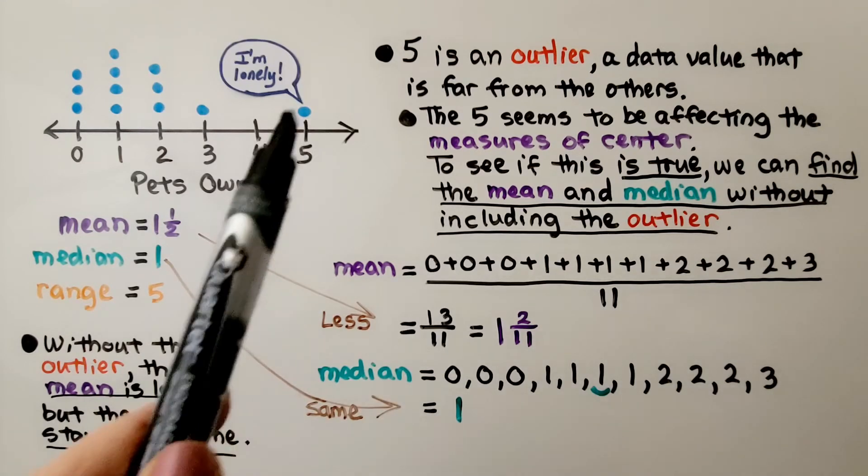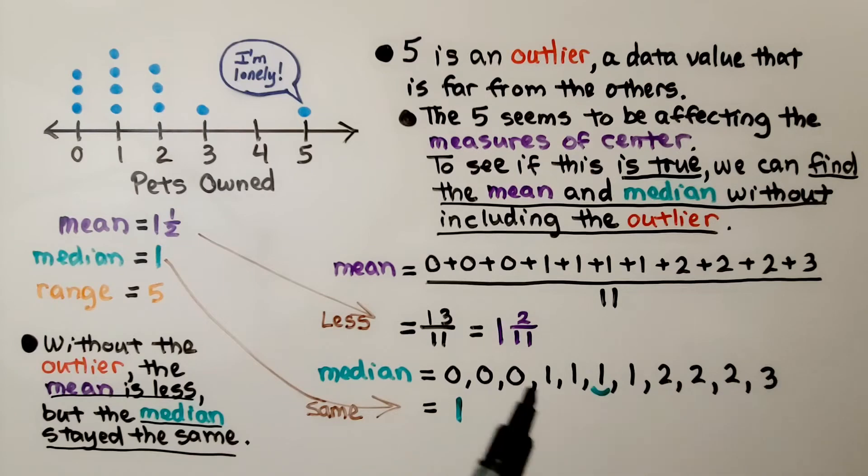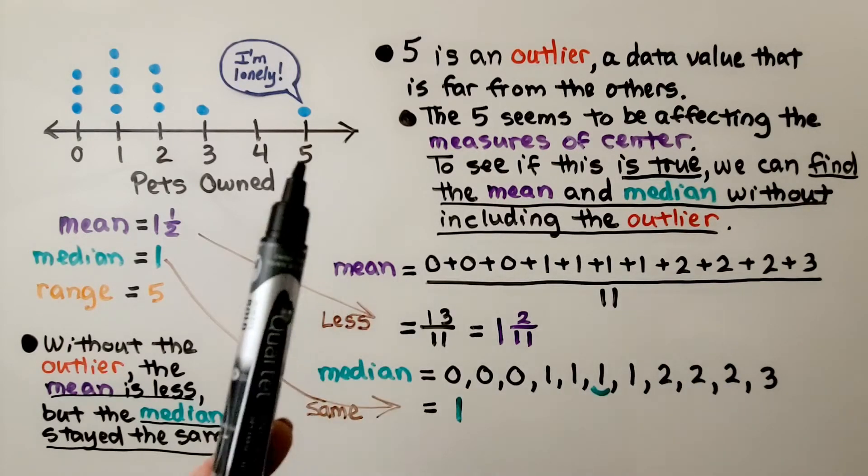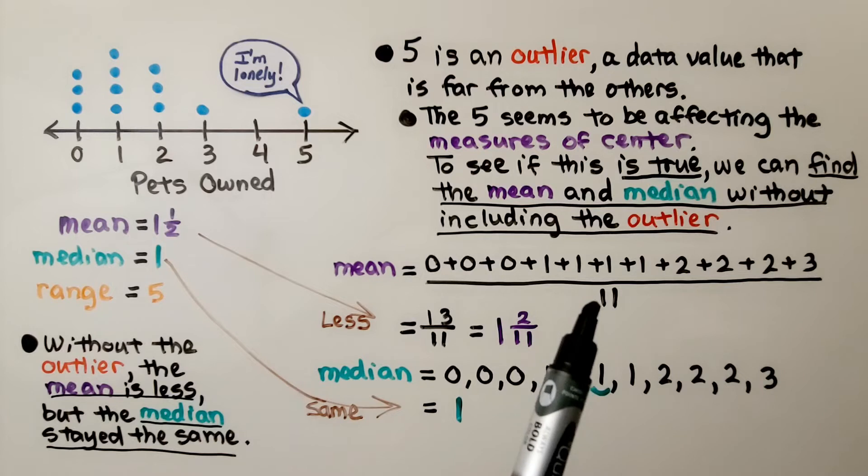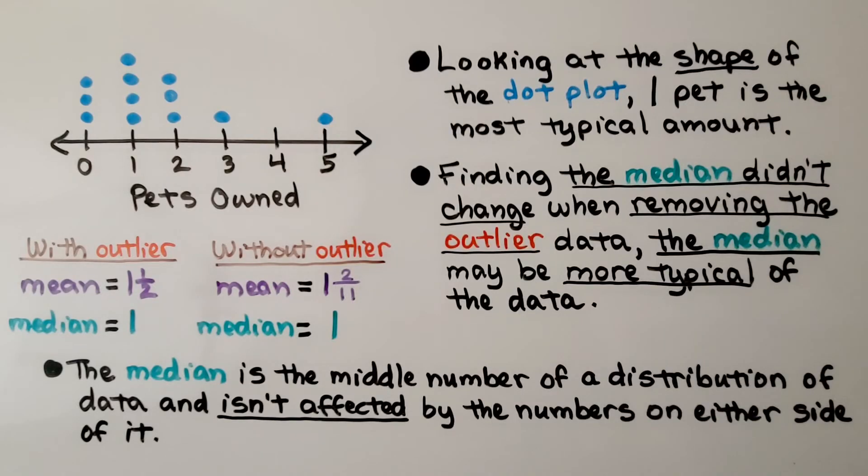When we look at the median, if we take this 5 away, we don't have it in our list, and when we find the middle number, we get a 1. Well, that stayed the same. Without the outlier, the mean is less, but the median stayed the same. If you're going to do this, remember when you take that outlier away, you are now dividing by one less number. We're not dividing by 12 anymore, we're dividing by 11.